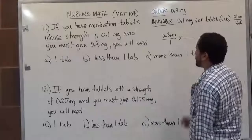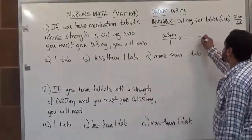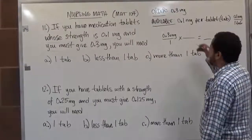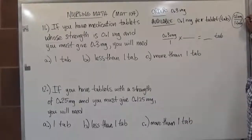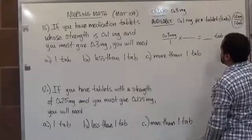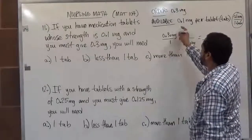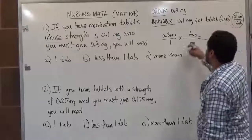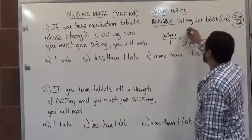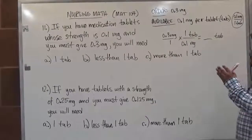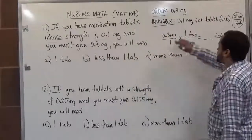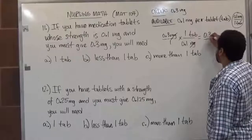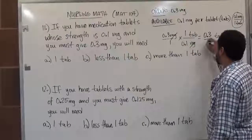When we want to find out how many tabs we need, we know our solution is going to be in tablets. We take the conversion factor and rearrange it so the milligrams cancel. The mg needs to be on the bottom so the two mg values reduce to one, and the tab becomes the numerator. The value 0.1 goes with milligrams on the bottom, and tab is 1 on top. Multiplying top times top and bottom times bottom: 0.3 times 1 is 0.3. The mg's cancel, leaving 0.3 on top and 1 times 0.1, which is 0.1, on the bottom.